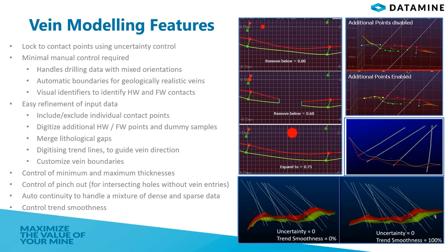Looking at the new features of vein modeling, we have an improved interface now. Variable continuity data sets with variable sample density can be applied with auto continuity. It is now better to detect parameters and ending boundary strings. One of the most important features is that we now have a command code to use in scripts. Also, switching between assigned lithology and vein modeling is very easy now.